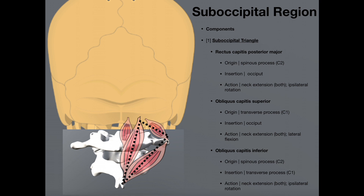The third muscle comprising the suboccipital triangle is the obliquus capitis inferior. Its name is somewhat of a misnomer because it neither originates nor inserts on the occiput, but we'll keep the name consistent. It originates on the spinous process of C2, the axis, and following the fibers upward, it inserts on the transverse process of C1. If both muscles contract at the same time, we get neck extension. If one contracts, we get ipsilateral rotation of the neck — so if the right obliquus capitis inferior contracts without the left, we get rotation of the neck to the right.